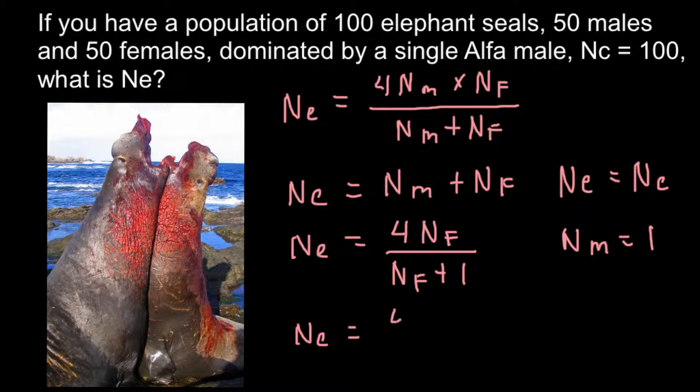We just now can put all the numbers that we have, so 4 multiplied by 50 females, and divided by 50 females, plus 1 male. And the answer here would be 3.9.